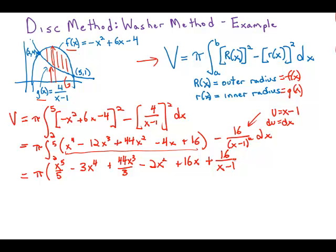And then this one integrates to positive 16 over x minus 1. The power of negative 2 going up to negative 1. And then all that will be evaluated at 5 and 2.